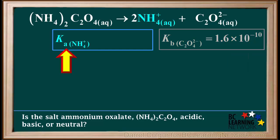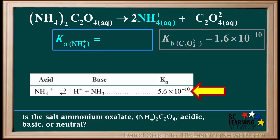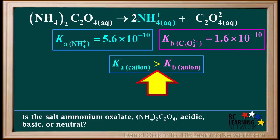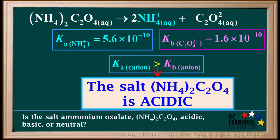Now we find the Ka for the cation NH4+. The Ka for NH4+ can be found directly on the acid table — it is 5.6×10⁻¹⁰. We see that Ka for the cation is 5.6×10⁻¹⁰ and Kb for the anion is 1.6×10⁻¹⁰. Since Ka for the cation is greater than Kb for the anion, the salt (NH4)2C2O4 is acidic.